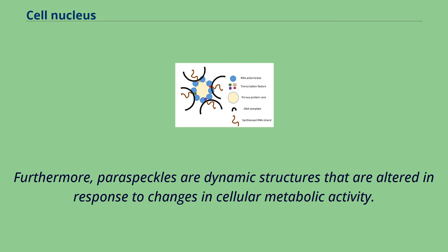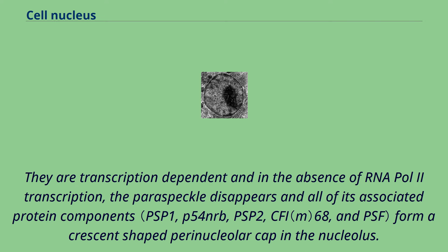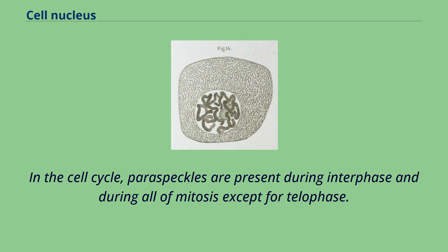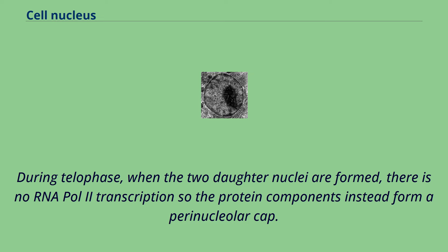Paraspeckles are transcription dependent, and in the absence of RNA Pol II transcription, the paraspeckle disappears and all of its associated protein components p68 and PSF form a crescent-shaped perinucleolar cap in the nucleolus. This phenomenon is demonstrated during the cell cycle: paraspeckles are present during interphase and during all of mitosis except for telophase. During telophase, when the two daughter nuclei are formed, there is no RNA Pol II transcription so the protein components instead form a perinucleolar cap.